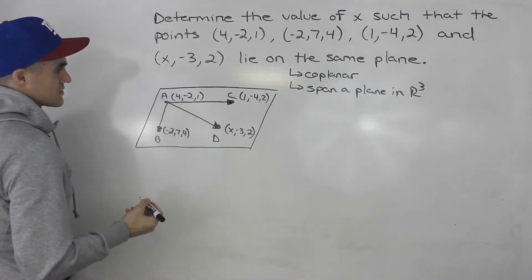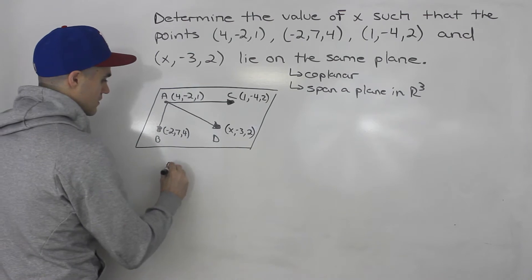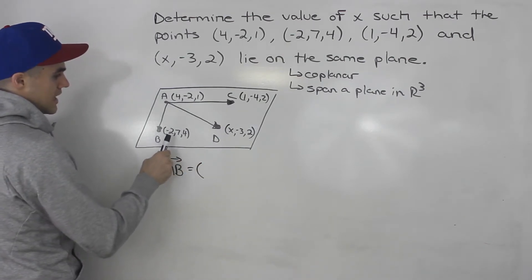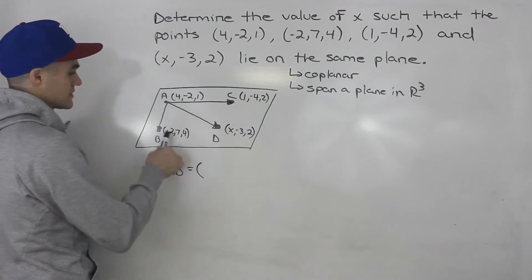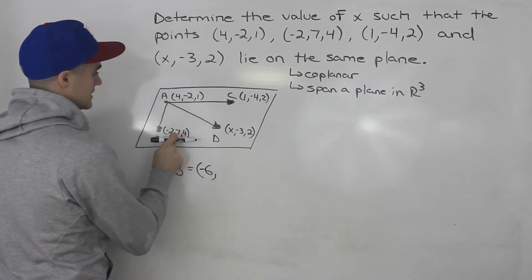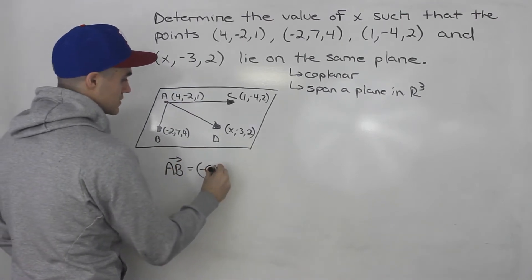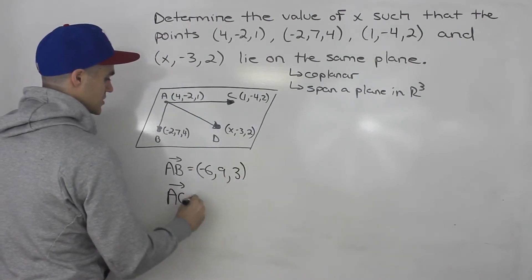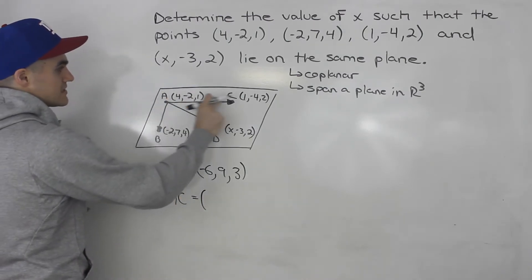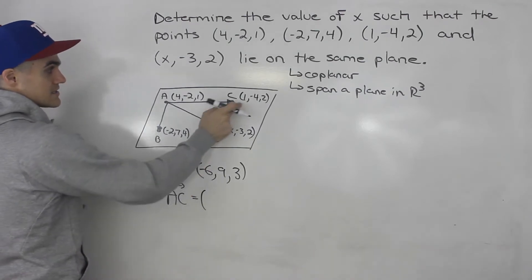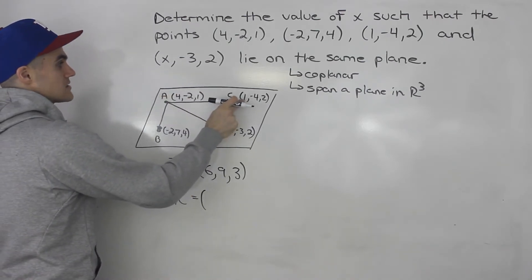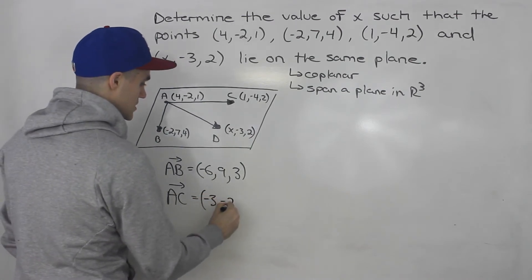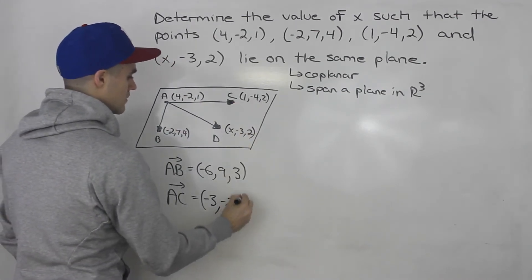We can create expressions for each of these vectors. Vector AB in component form: take coordinates of B minus coordinates of A. That gives (-2−4, 7−(−2), 4−1) = (−6, 9, 3). For vector AC: take coordinates of C minus coordinates of A. That gives (1−4, −4−(−2), 2−1) = (−3, −2, 1).